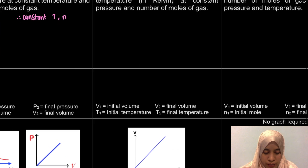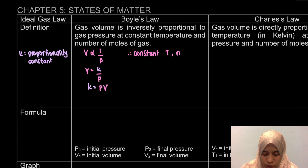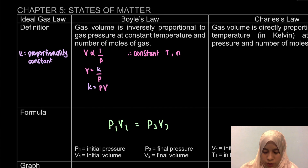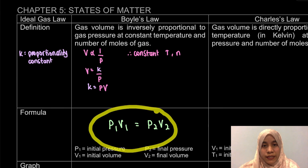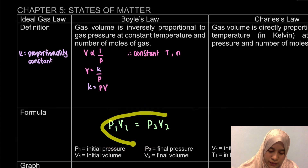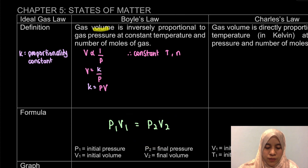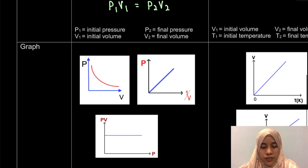For the calculation, for the case of different pressure dengan different volume, dia punya formula will be P1V1 equal to P2V2. So actually this formula, you have to memorize, sebab nak buat calculation memang based upon this lah. But then, even though equation dia macam ni, relationship dia sebenarnya volume is inversely proportional to pressure. So next is actually about graph. P is inversely proportional to V, so that's why graph dia jadi macam ni.